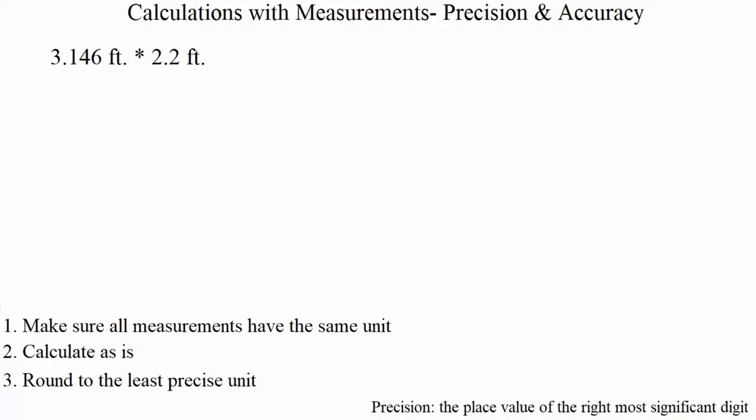Our next example: 3.146 feet times 2.2 feet. Both are in feet, so no unit conversion is needed. We take 3.146 times 2.2 and plug that into the calculator, getting 6.9212.